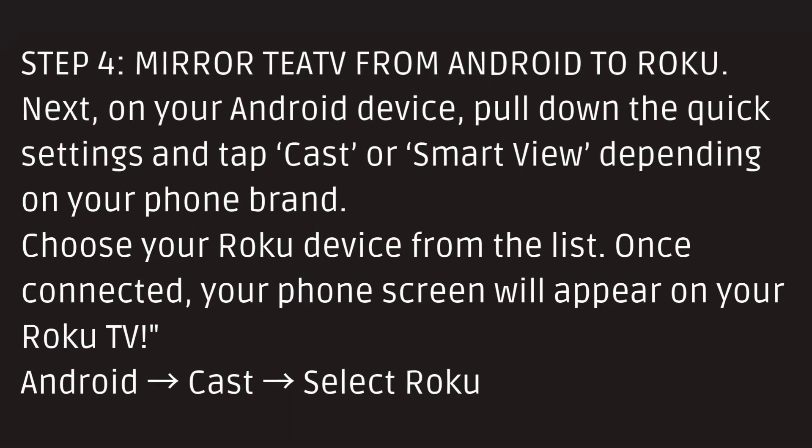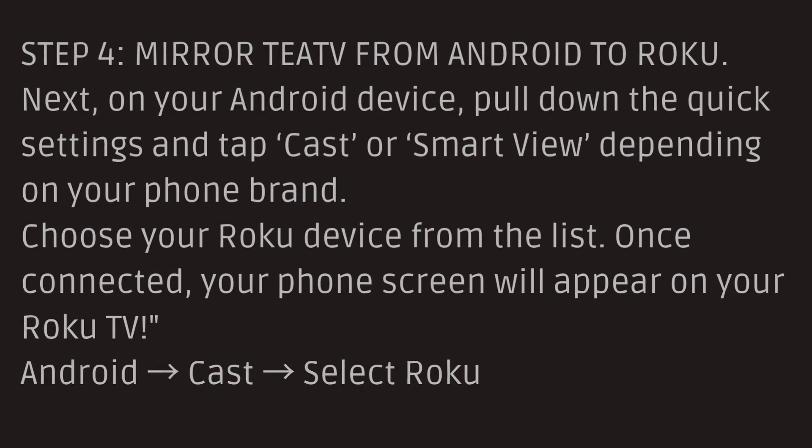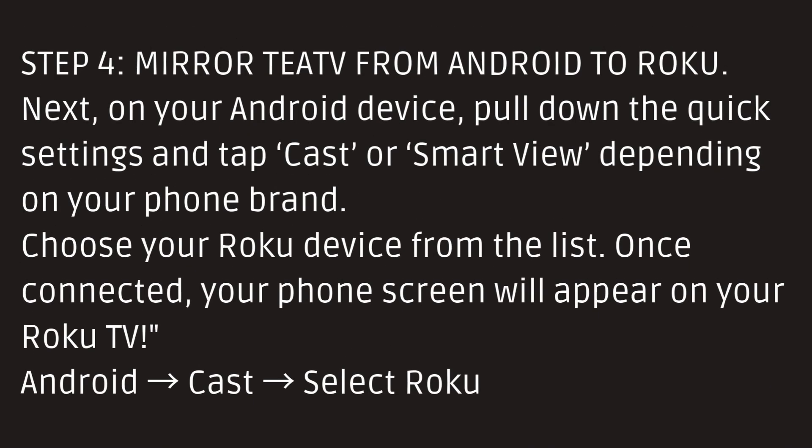Step 4: Mirror TTV from Android to Roku. On your Android device, pull down the quick settings and tap 'Cast' or 'Smart View', depending on your phone brand. Choose your Roku device from the list. Once connected, your phone screen will appear on your Roku TV.